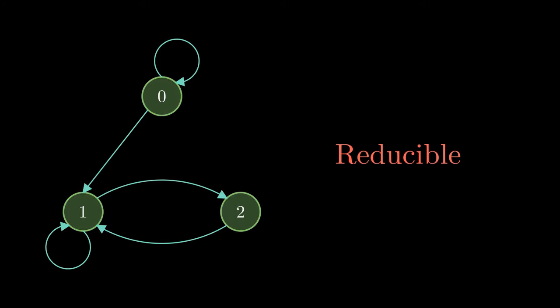Now I'm gonna add a single edge connecting state 2 and state 0. This time, we can easily see that every state is reachable from every other. Consequently, state 0 has become recurrent. This type of chain where we can go from any state to any other is called an irreducible chain.